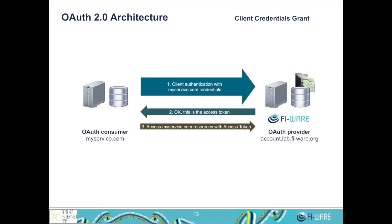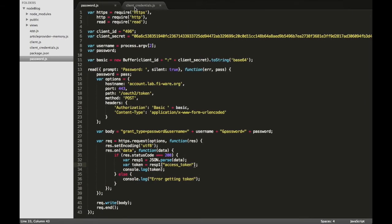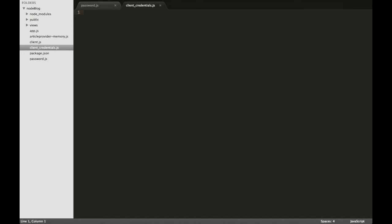Now we will see the next OAuth mechanism in which we won't use the credentials from the user. We will only use the credentials of our application to obtain a valid OAuth token. This is a similar request in which we only send the credentials of the application — the client ID and the client secret — so the access token belongs to our application instead of a user. We go back to the code and here we have another file that we have to fill with the corresponding code.